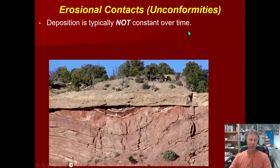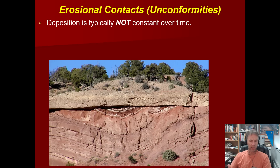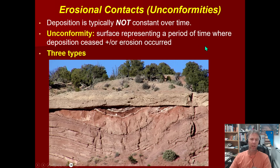Finally, we get into our major topic today: unconformities, or erosional contacts. There's no place on Earth where rocks have been continuously deposited layer upon layer for billions of years. There are places where rocks get uplifted, hiatuses in the depositional record, and consequently periods of time — sometimes long periods — where rocks are eroded. So erosion happens. And we're going to look at a couple of these erosional contacts, which are known as unconformities.